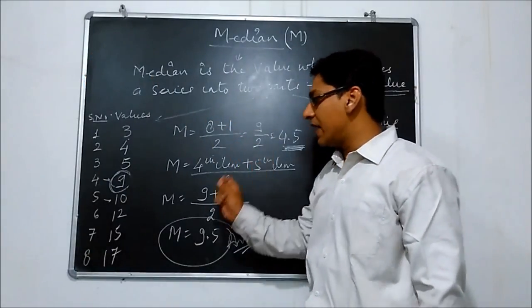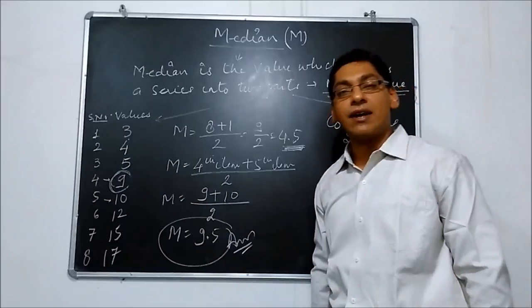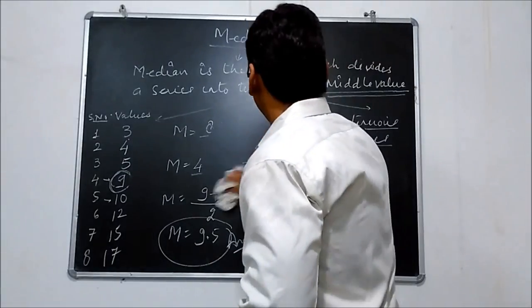And then we use formula M equals to (n+1) divided by 2.